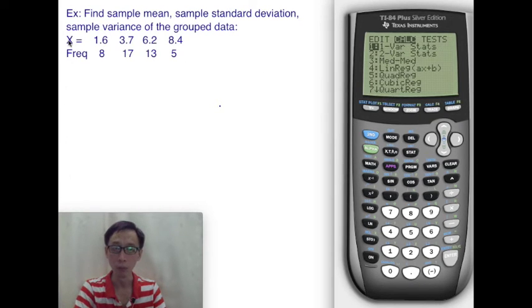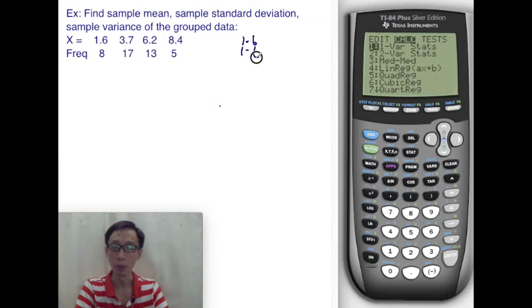Here, I only have one random variable x. It's just described in a way where we have unique outcomes, and then separately with the frequency. This is sort of like not trying to write down 1.6, 1.6 eight times, followed by 3.7, 3.7, 17 times, and so on, right?